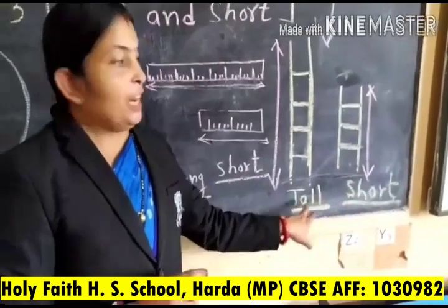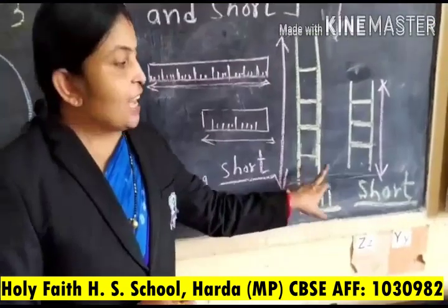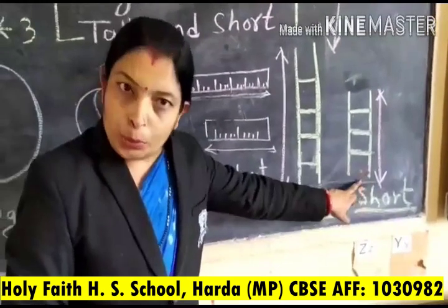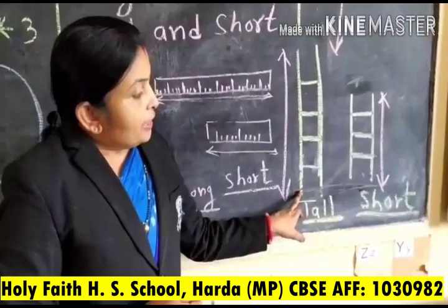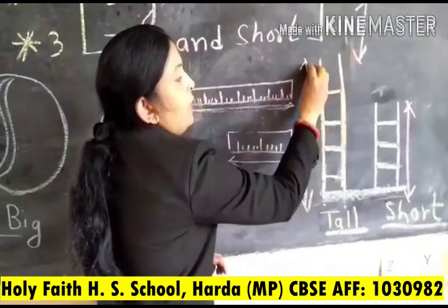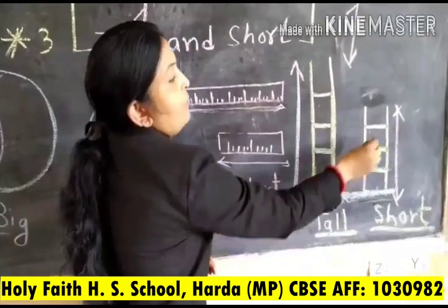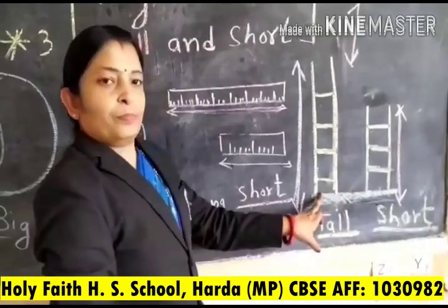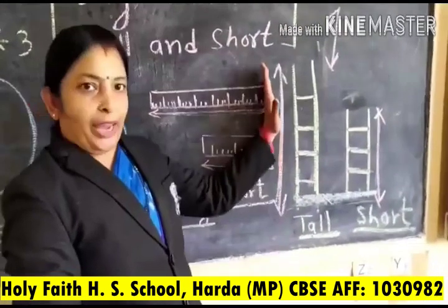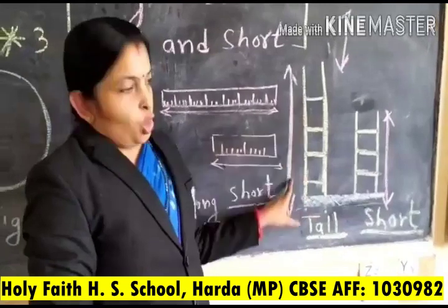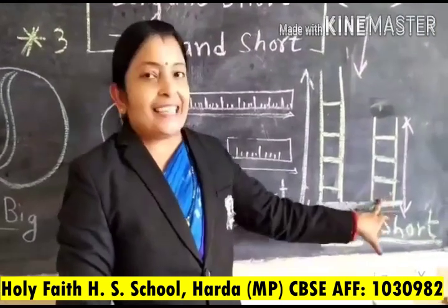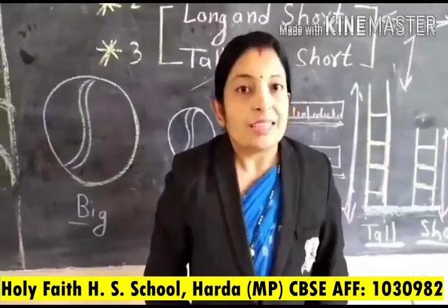Look children — these are two ladders. They are starting from the same place. Look — so high! Which one is tall and which one is short? This ladder's height is so high, they are tall. And this ladder is short.